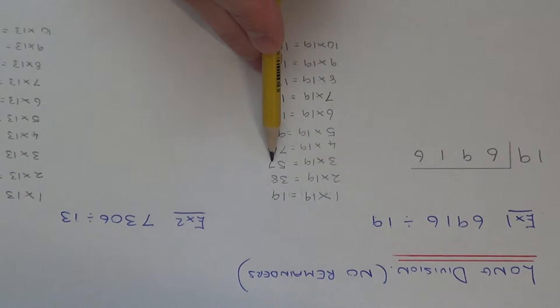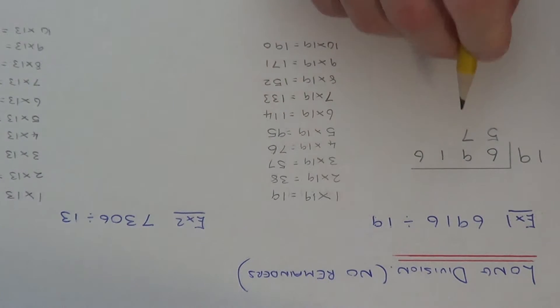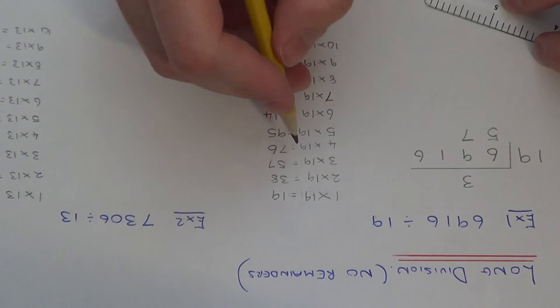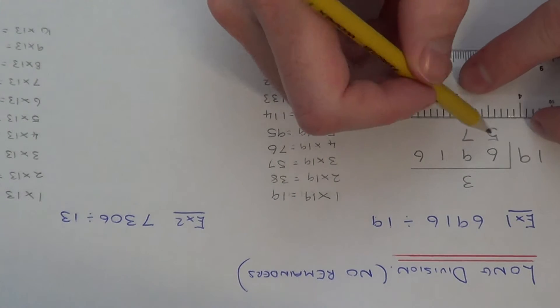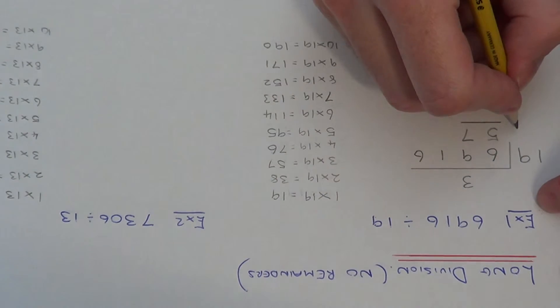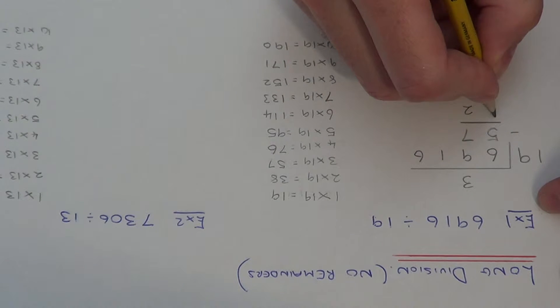So 76 is too big, so the best one we can do is 57. So if you write 57 underneath the 69, and if you write the 3 at the top, because 3 times 19 is 57, so we just need to now take 57 from the 69. So this leaves us with 12.